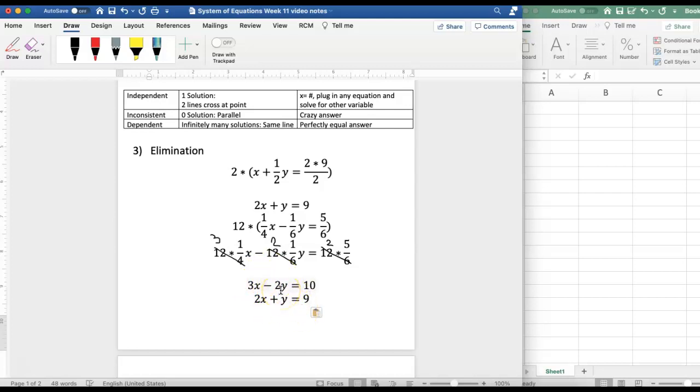I will take this equation and multiply it by a positive 2 so that the coefficients in front of the y matches and when I combine them it'll eliminate the y value.